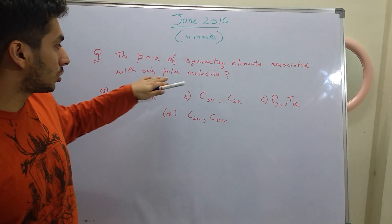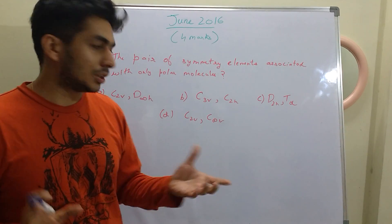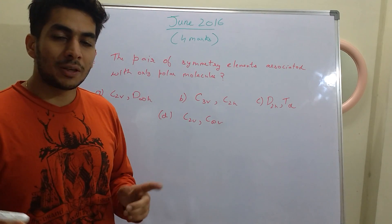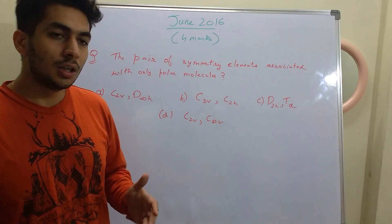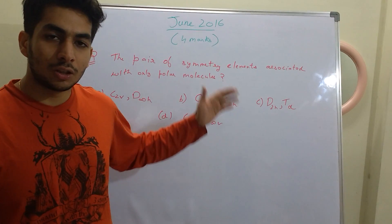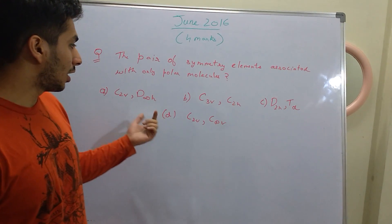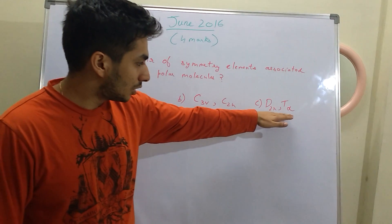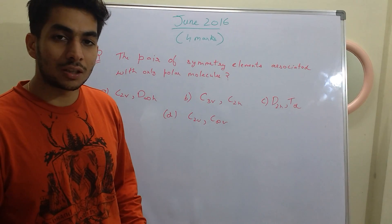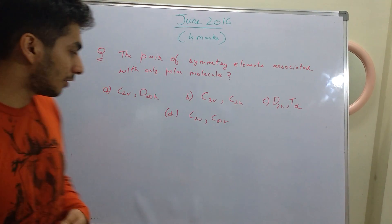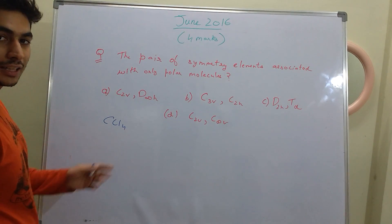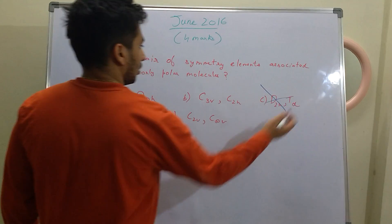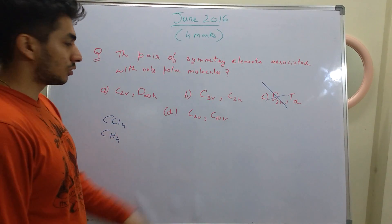The question says: identify a pair of symmetry elements associated with only polar molecules. There are pairs of symmetry elements given in each option and you have to see which ones are associated with only polar molecules. In my previous video on general aptitude I told you how to reverse-engineer a question — put in the options and see whether you come out to the right answer. First, your eyes should go to the options that are incorrect. For example, Td is tetrahedral. Methane and CCl4 are tetrahedral and highly non-polar, so you can cancel that option out.